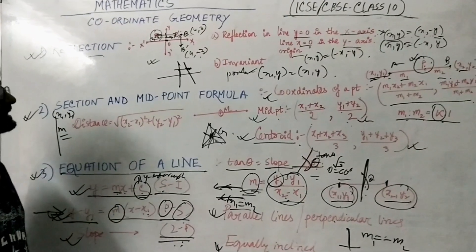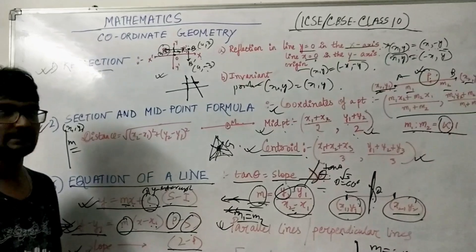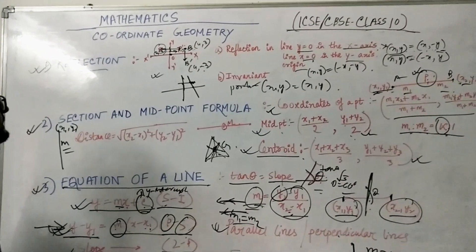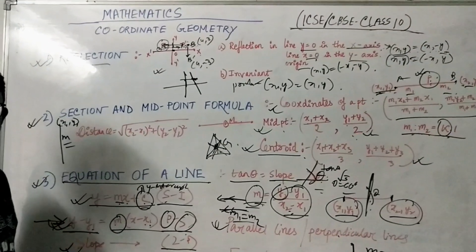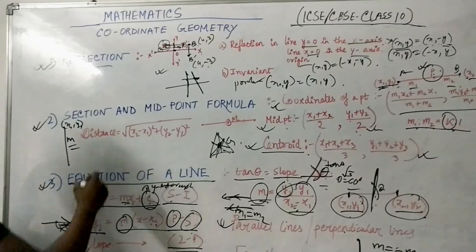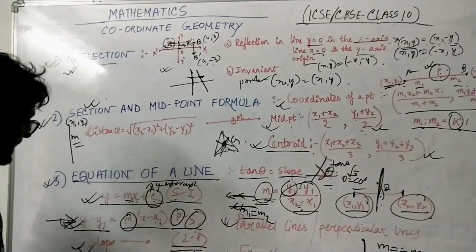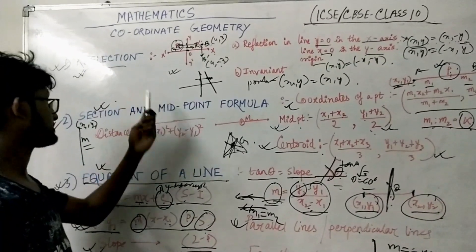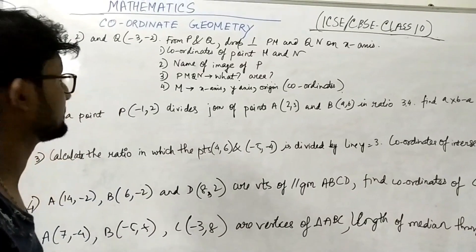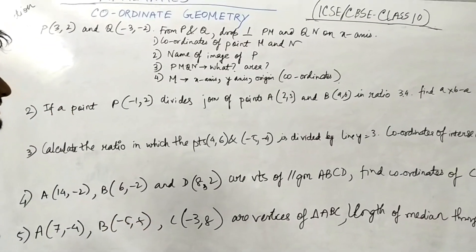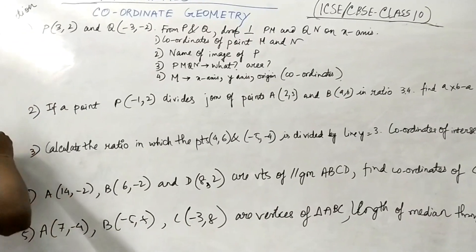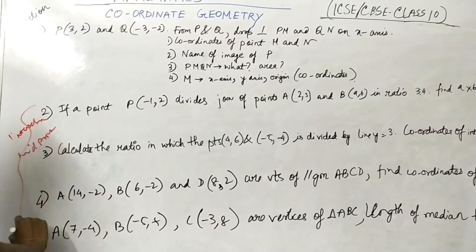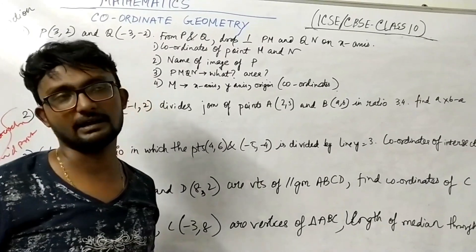That's the theory covered briefly. If you have any doubts, ask in the comment section or contact me via my channel number. Now I will come back with the numerical part covering reflection, section formula, and midpoint formula. The equation of a line is a huge part so it will be covered in Part 2. I have five numericals here from the reflection and midpoint formula sections.